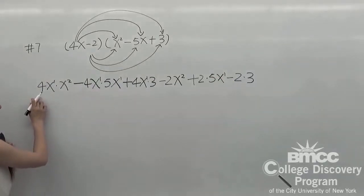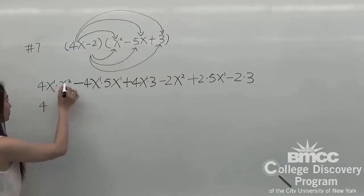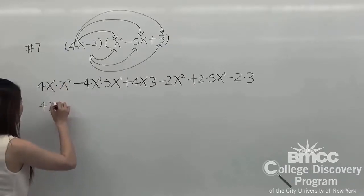First step, we need to times the coefficient. 4 times 1, it will be 4. We need to add the exponent. 1 plus 2, it will be x cubed.